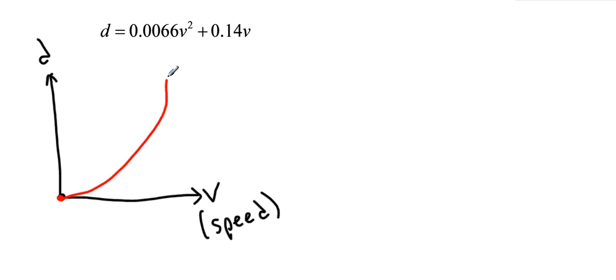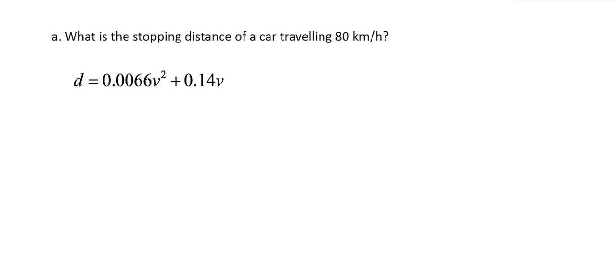This means that the faster a car is going, the greater the stopping distance. That's pretty much what the scenario is. Here's the exact equation and here's a rough idea of what's going on. Now let's look at part a. It says what is the stopping distance of a car traveling 80 kilometers per hour.